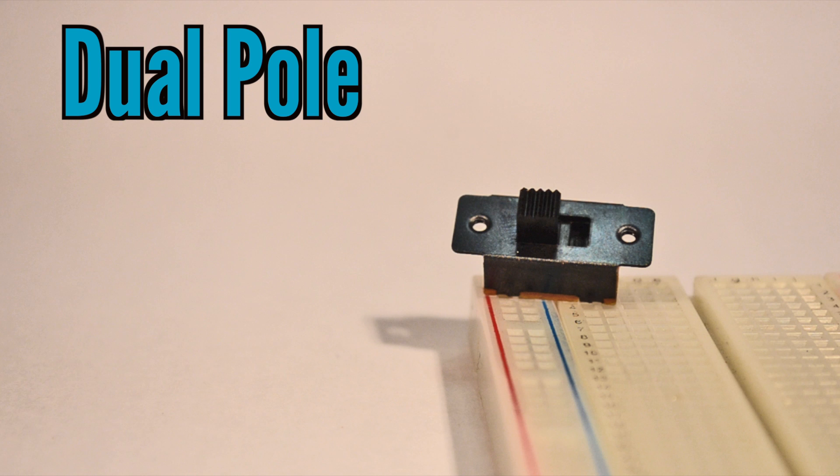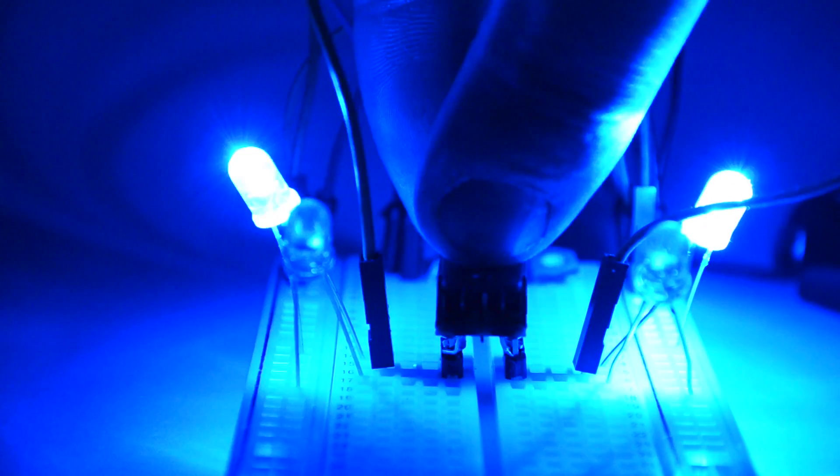The advantage of dual pole switches is that you can change the direction of your output electrical current, like in this example where power is being directed to two LEDs.